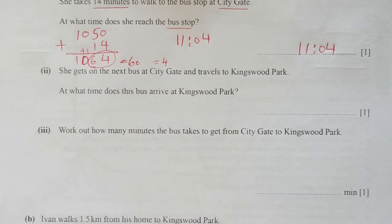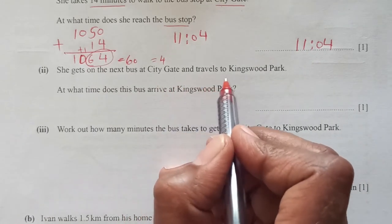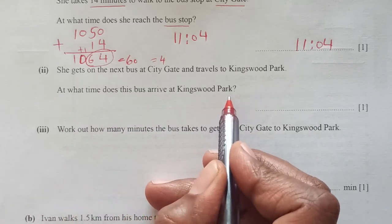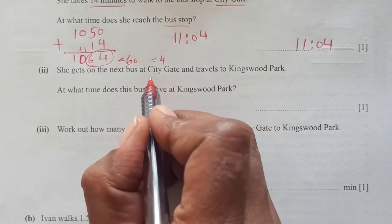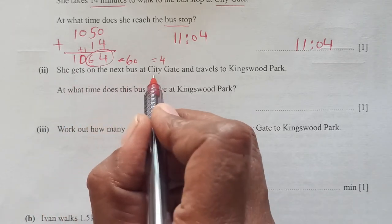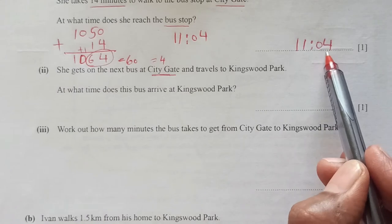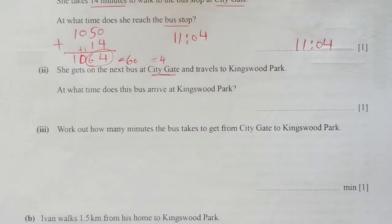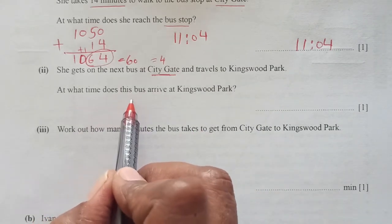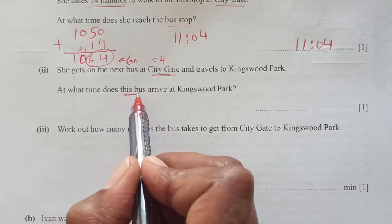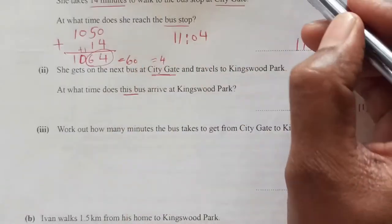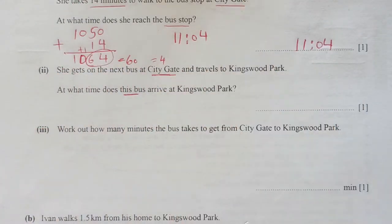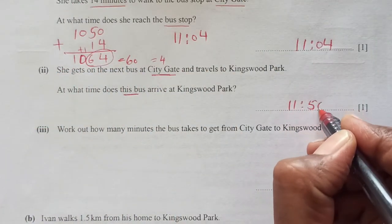She gets on the next bus at City Gate and arrives at Kingswood Park. At what time does the bus arrive at Kingswood Park? She arrives at the bus stop at 11:04, so she can take the bus at 11:12. From City Gate, this bus arrives at Kingswood Park at 11:50.